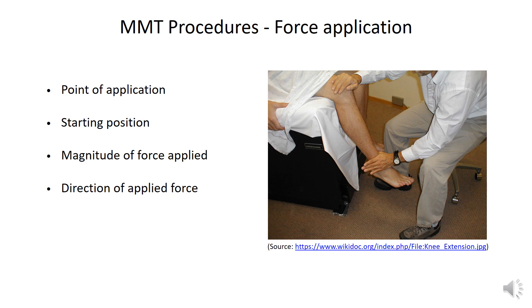Thirdly, the relative appearance of how strong the patient's muscle is really depends on how strong the clinician is. For a stronger clinician, the patient may appear weaker. This also applies if the same clinician exerts different resistance force to test the patient. Lastly, the direction of the force applied can affect the magnitude of the force. A resistance applied at 90 degrees to the limb generates a larger force compared to one that is applied at the same point but at an angle.